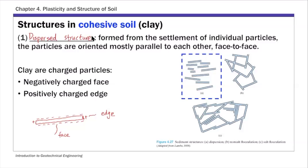So this dispersed structure, as shown on this slide here, basically all the particles, those individual particles, they are oriented mostly parallel to each other. So they are face to face, basically. And because of this negatively charged face, they are basically kind of in repel to each other. So they are in parallel fashion. So that's the first type of structure, called dispersed structure.